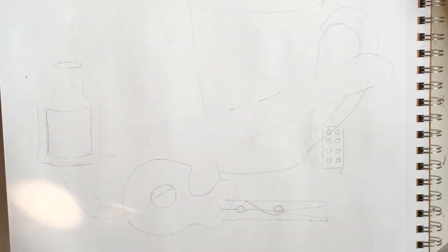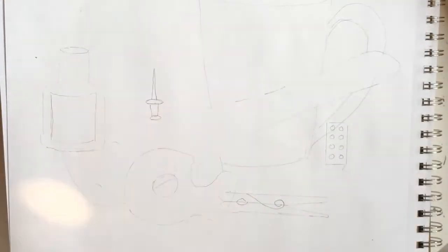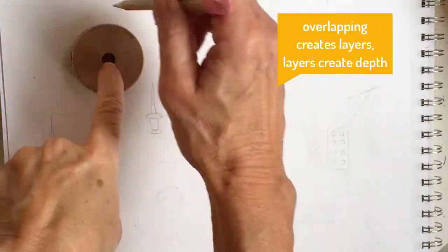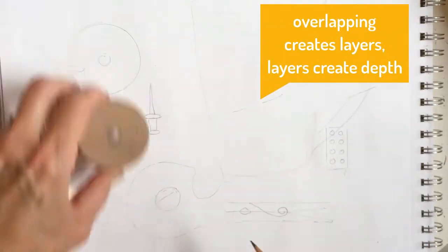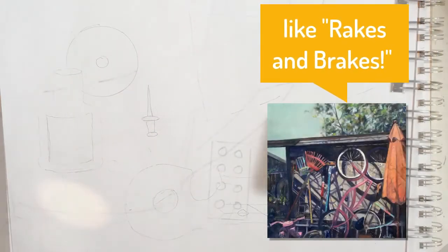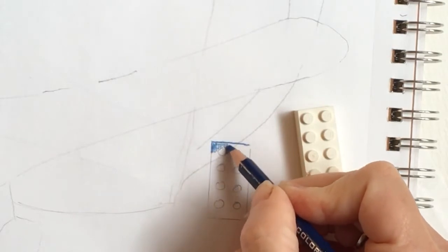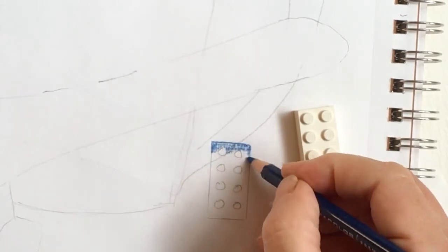After everything is traced make sure the lines under the objects are erased. By doing this your objects will show depth like the rakes and breaks painting. Now that we have the drawing completed let's color in our shapes.